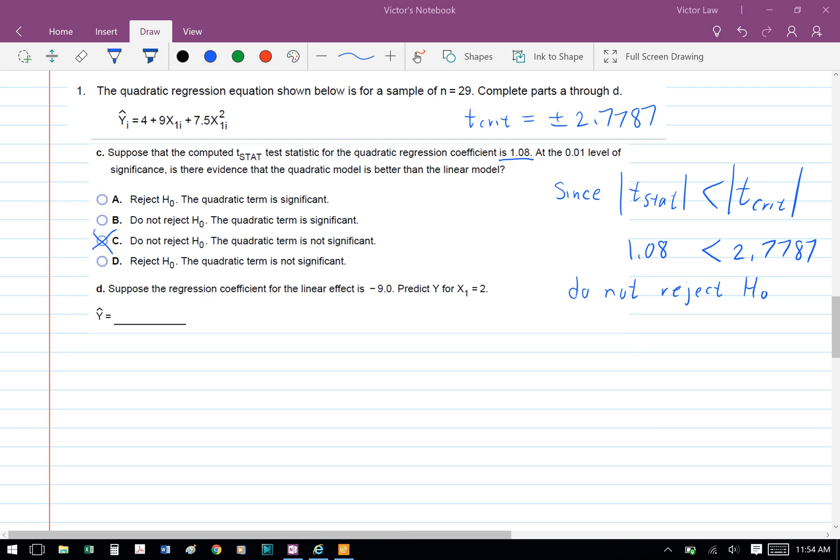And the answer is that it will not change the result, since our absolute value of the t statistic is still less than t critical. So therefore we do not reject H₀.